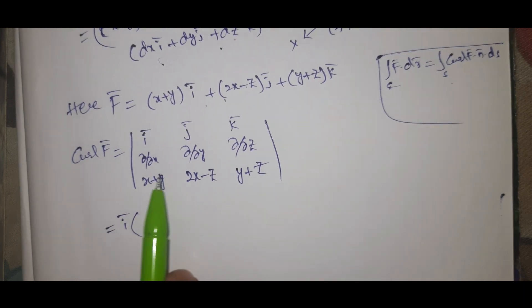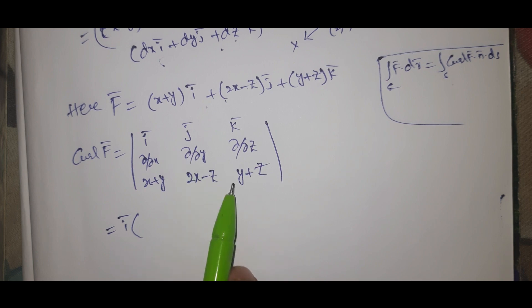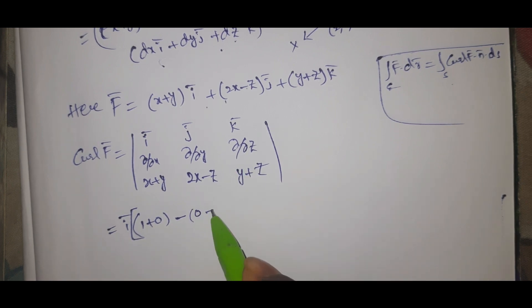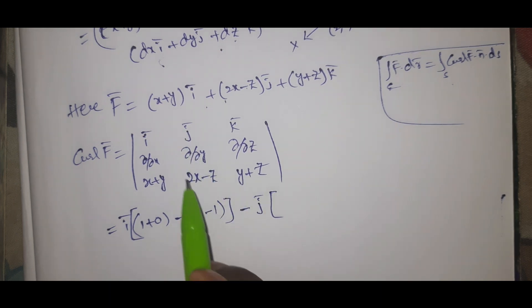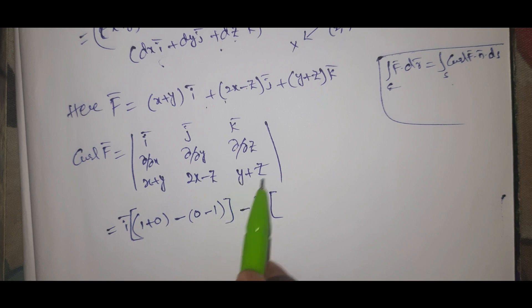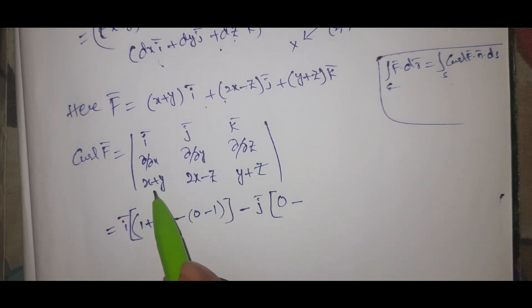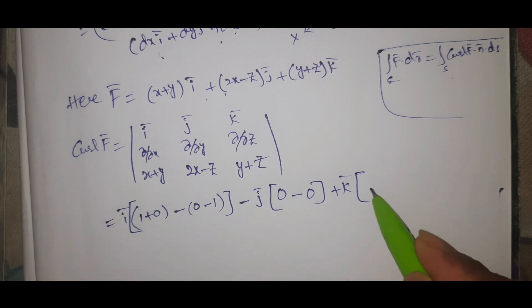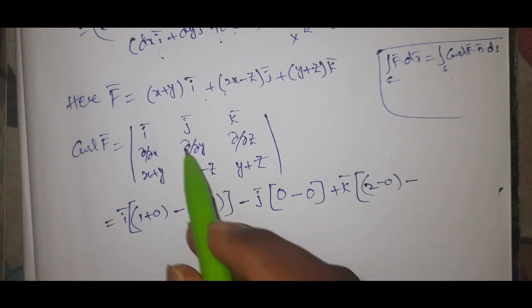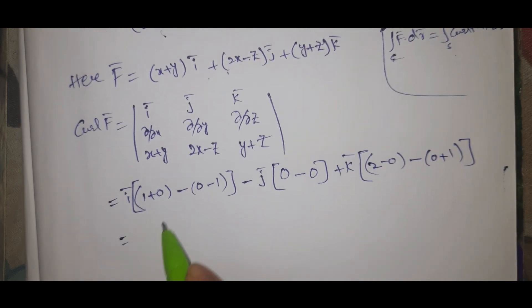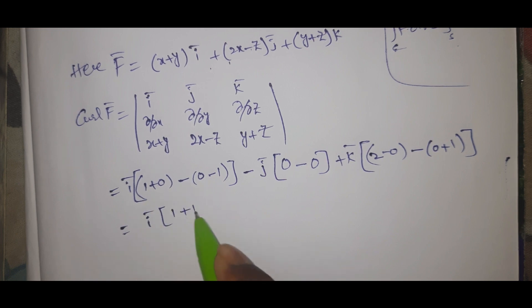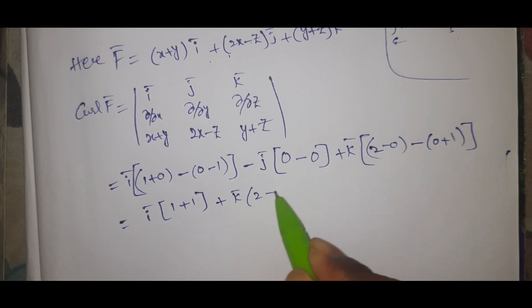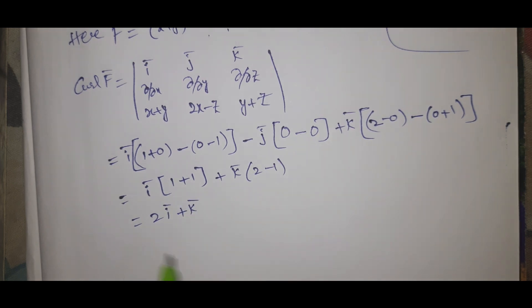Computing the determinant: the î component gives ∂(y+z)/∂y − ∂(2x−z)/∂z = 1 − (−1) = 2. The ĵ component gives ∂(x+y)/∂z − ∂(y+z)/∂x = 0 − 0 = 0. The k̂ component gives ∂(2x−z)/∂x − ∂(x+y)/∂y = 2 − 1 = 1. Therefore, curl F̄ = 2î + k̂.